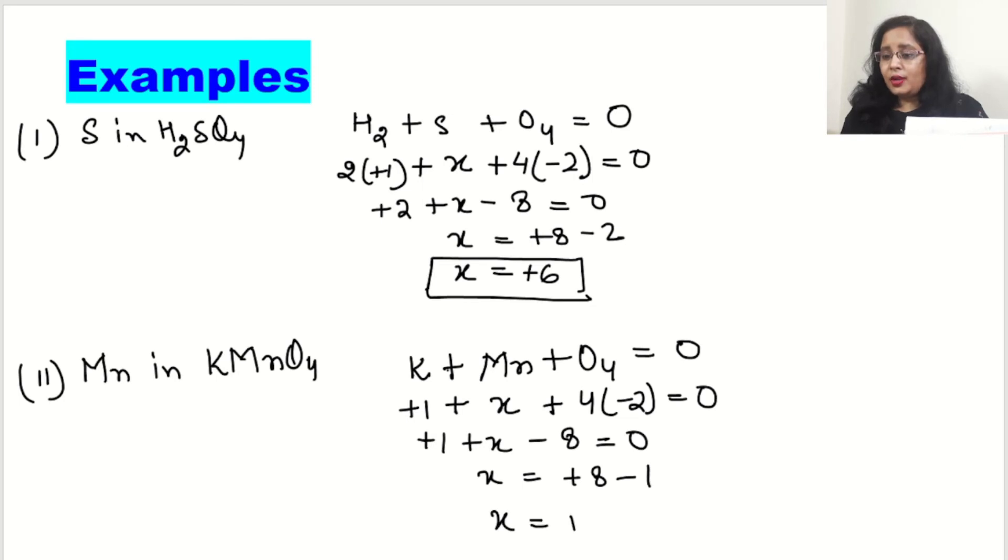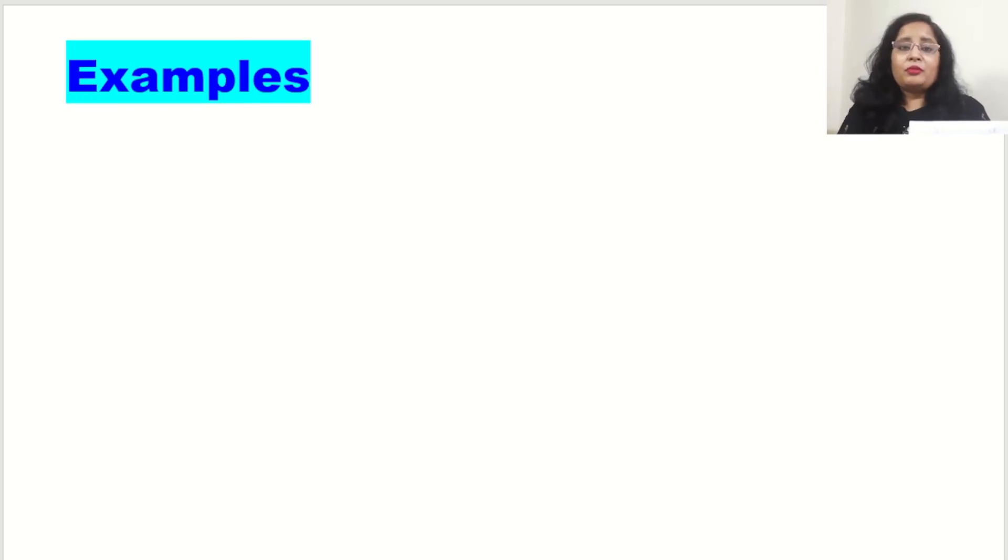So plus 1 plus x minus 8 is equal to 0. So x is equal to plus 8 minus 1. So x is equal to plus 7. And that plus 7 will be the oxidation state of manganese in KMnO4.